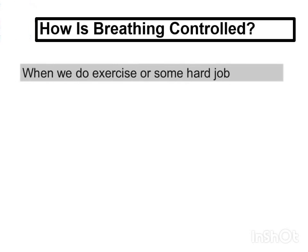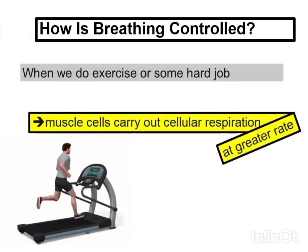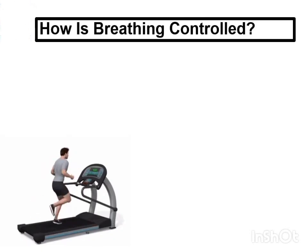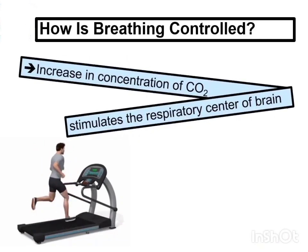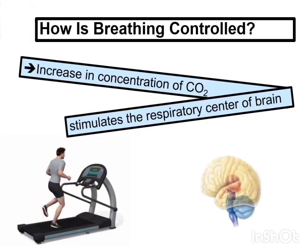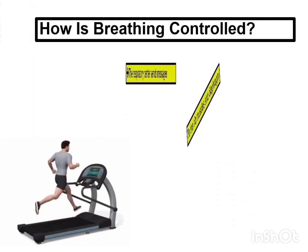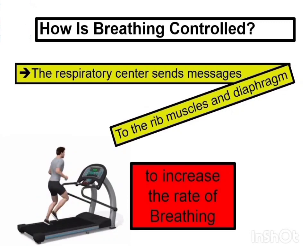When we do exercise or some hard job, muscle cells carry out cellular respiration at a greater rate, and more carbon dioxide is released into the blood. The increase in the concentration of carbon dioxide stimulates the respiratory center of the brain, which then sends messages to the rib muscles and diaphragm to increase the rate of breathing.